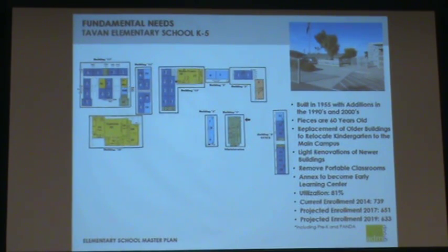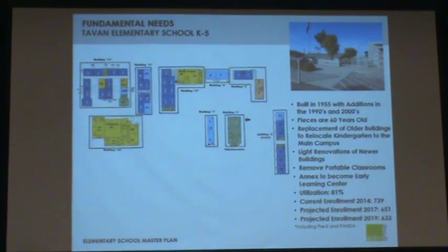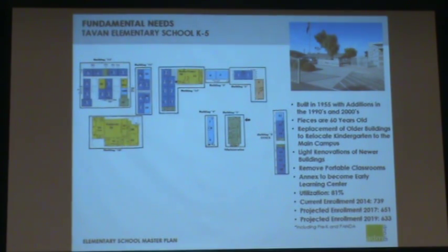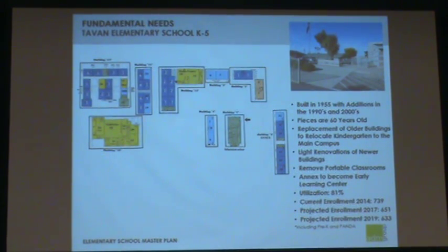Tahan Elementary School, K-5, has been built in sections — first in 1955 with additions in the 1990s and 2000s, with some older pieces being 60 years old. The recommendation might be replacement of the older buildings only so that the kindergarten, currently across the street, can be relocated onto the same campus — a safety concern. They also have portable classrooms, and an option would be to use the annex currently housing kindergarten as an early learning center. Utilization is 81%. Enrollment for November 2014 is 739. Applied Economics projects enrollment dropping to 651 in 2017 and 633 in 2019.